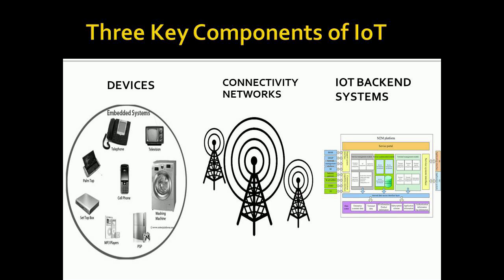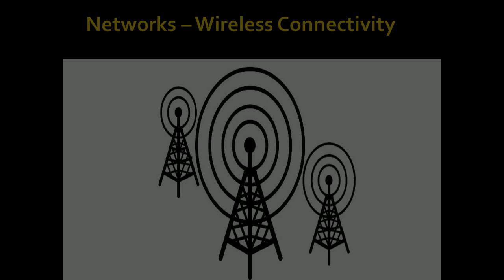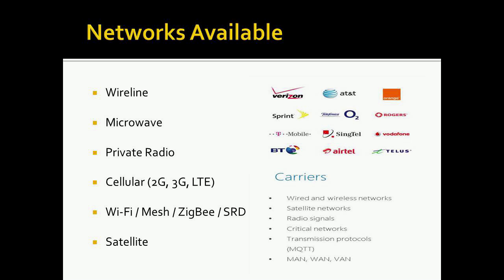On the back end, that's a world unto itself with computer systems, the cloud, storage, databases, and big analytics. The networks available now are typically wireline, microwave, private radio, traditional cellular — 2G, 3G, and LTE — and then coming 5G technologies, Wi-Fi mesh, Zigbee and other short-range device technologies (SRD), and satellite communications.